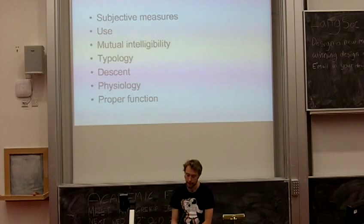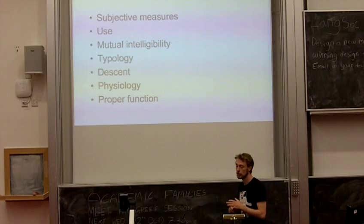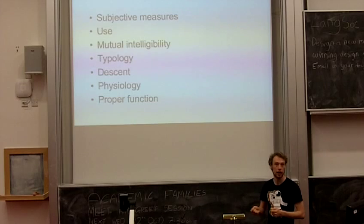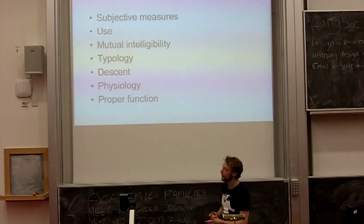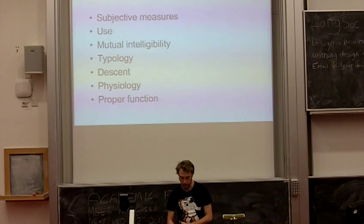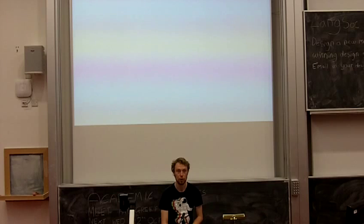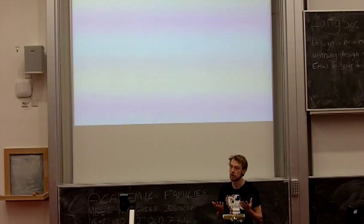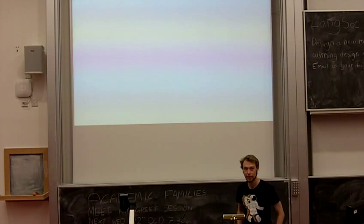Why was this such a hard problem? I'm going to go through different measures of how to define a language. Let's assume we want to know whether languages are real things we can put in our models. I'll show how each measure fails to define a language — they all fail to demarcate a stable notion of what a language is. First approach: can't we just ask people? You said you speak one language — that's a clear answer. Surely that's evidence that languages are real things that people think they are. I'm going to do a live experiment to demonstrate that's not the case.